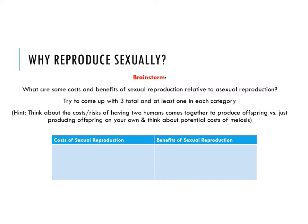I want to start with a brainstorm. Take a few minutes to think through what you think the costs and benefits might be of sexual reproduction relative to asexual reproduction — try to come up with three, at least one cost and at least one benefit. Think about the costs and risks of having two humans come together to produce offspring versus producing your own offspring, or think about the biology of meiosis and the potential costs of meiosis for individuals.